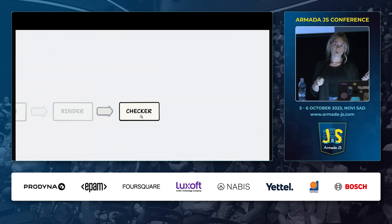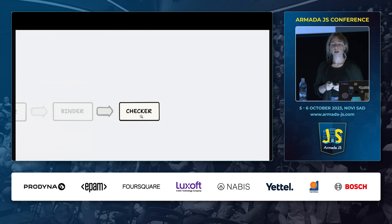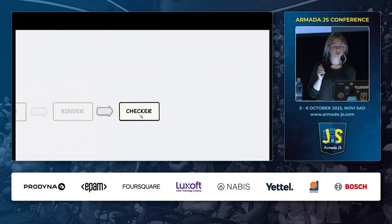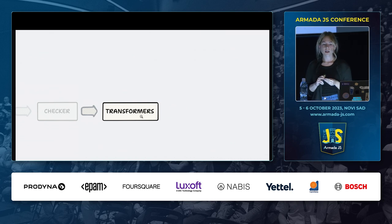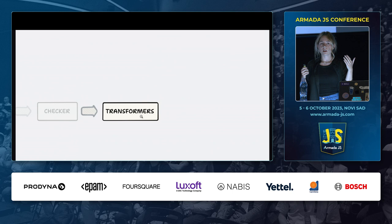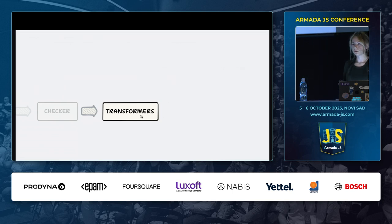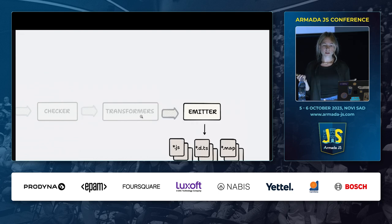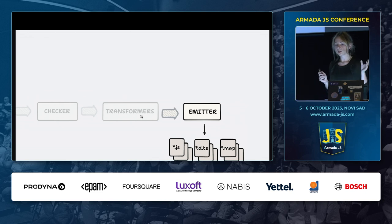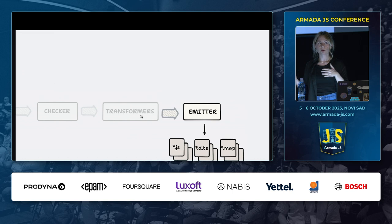If the type checker sees a node with no type attached, it may go up the tree to see if there was an explicit type declaration or some information higher in the tree, then it knows what the type of the node lower in the tree will be. Then we have Transformers — depending on your target and what syntax you use, it will run different transformers. For generating JavaScript, it strips all the type information from the AST. To generate DTS, it strips all the JavaScript information. Finally, we have the Emitter that produces the files. In reality it's much more complicated with a lot of back and forth, but this is more or less what's going on.